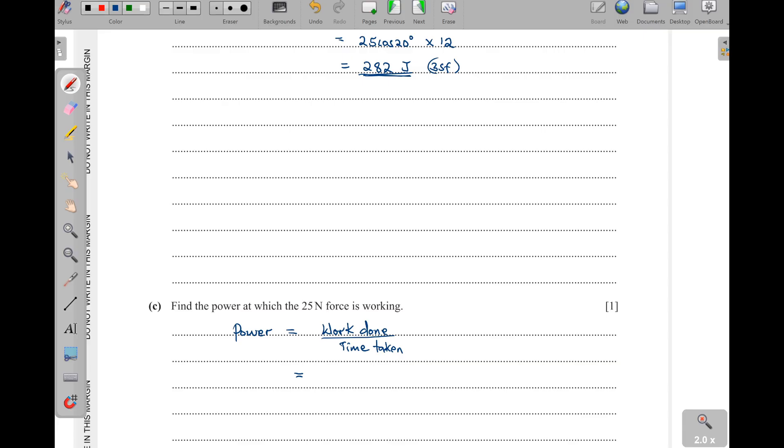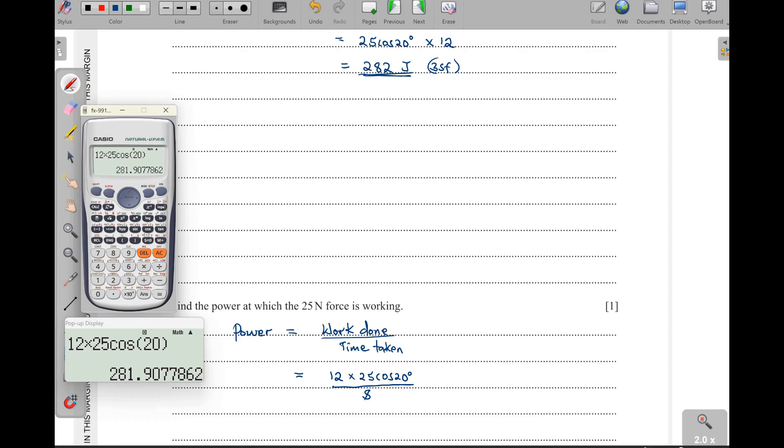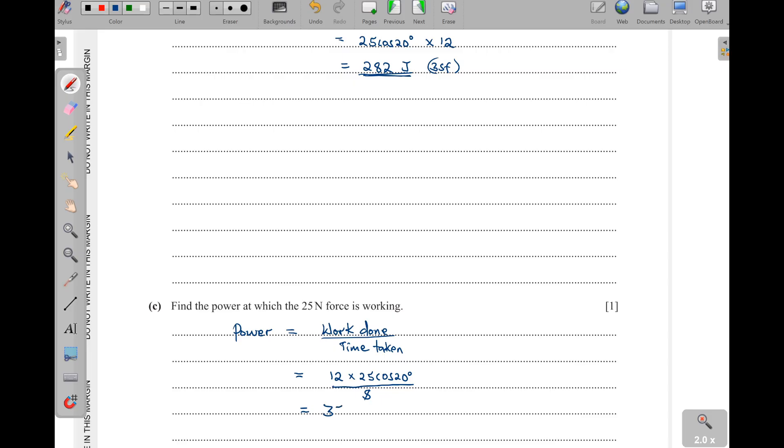So we shall have this 12 here multiplied by 25 cos of 20, which gave us the work done, then we shall divide by the time taken, which is 8. So the answer I've gotten, I'm just going to divide it by 8. That one will give us 35.2 watts to 3 significant figures. So that becomes our answer there.